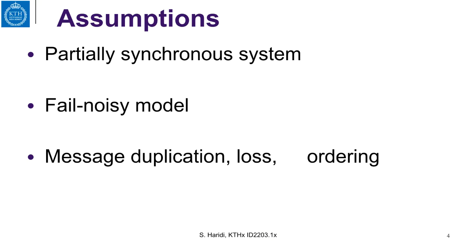What we are going to present here is an algorithm called Paxos that solves uniform consensus in the fail-noisy model, if we have access to an eventually perfect failure detector, or equivalently omega — the eventual leader election. So our assumption is a partially synchronous system, that is the fail-noisy model. We will also allow a weaker channel model, permitting message duplication, loss, and reordering.